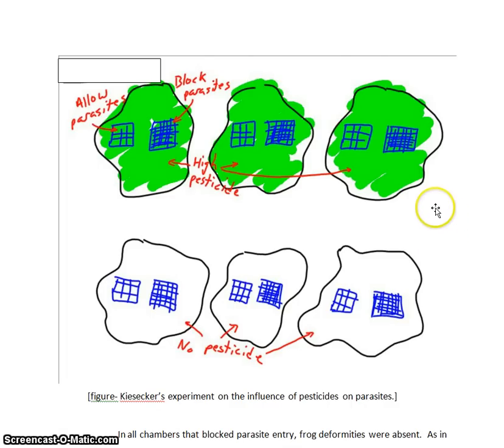There were two cages in the high pesticide ponds, one that allowed parasites, one that blocked parasites. But then there were two cages in the no pesticide ponds, one that allowed parasites, one that blocked parasites. So you have four conditions in the experiment.